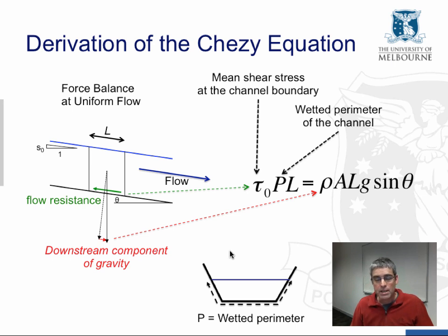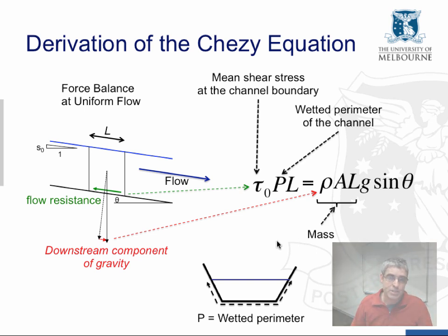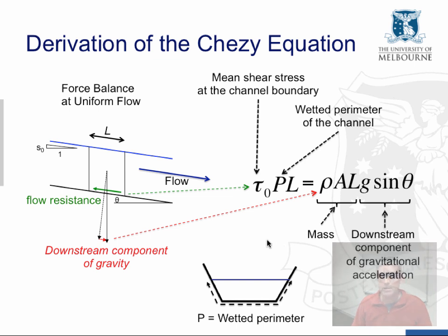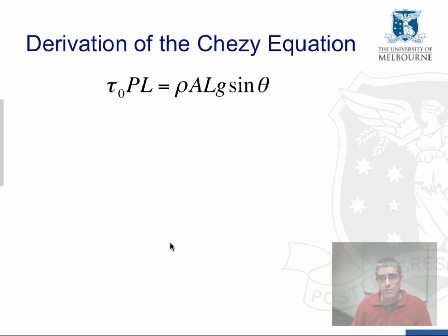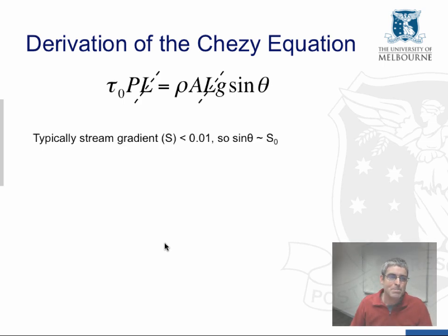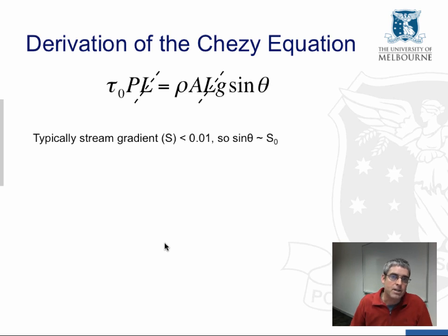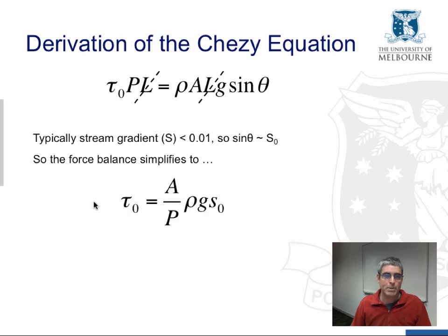The downstream component of gravity is given by a second expression, where the density times cross-sectional area times length L gives us the mass of that water volume, and g sin θ is the downstream component of gravitational acceleration. We can cancel L from both sides. Typically in an open channel the stream gradient is less than about 1 in 100 (0.01), and under these conditions sin θ approximately equals the gradient of the stream — the distance of fall over the distance of travel. So the force balance simplifies to: shear stress at the bed equals the cross-sectional area divided by the wetted perimeter, times the product of density, gravitational acceleration, and the stream gradient.